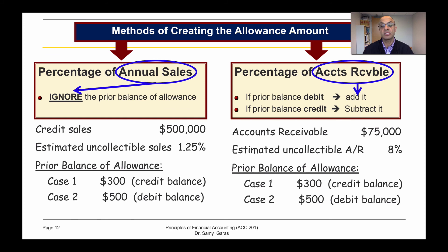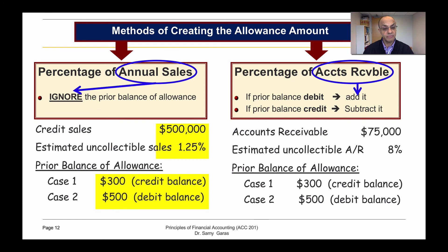If the prior balance is a debit, we add it to the new amount; if it's a credit, we subtract it from the new amount. Let us look at an example: we have sales of five hundred thousand, the estimated uncollectable amount is 1.25%, and then we have two prior balances — one credit for three hundred and one debit for five hundred.